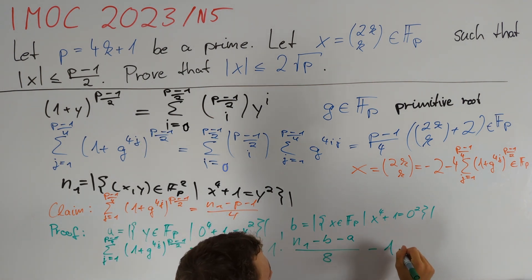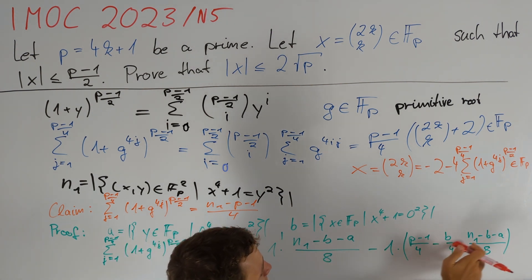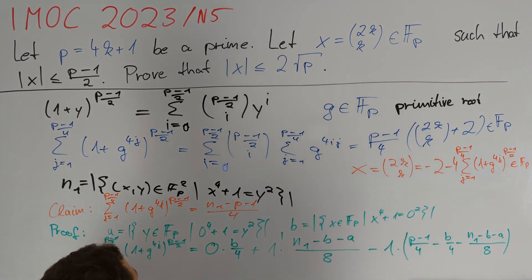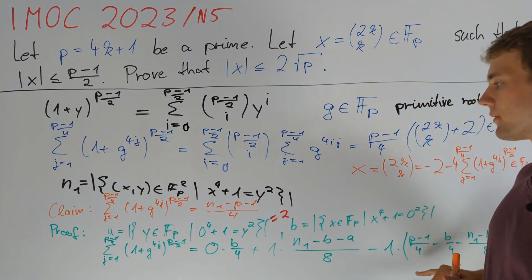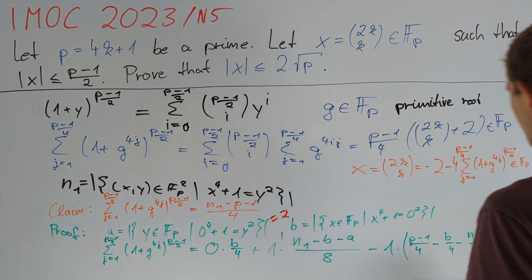The remaining summands equal -1. Taking a look at our expression we see that the b terms cancel each other out. Therefore we are left to deal with a and we see that a must always equal 2 because 1 equals y^2 if and only if y is equal to plus or minus 1 modulo p. Finally this term simplifies to our desired value of n1 minus (p-1) all divided by 4.